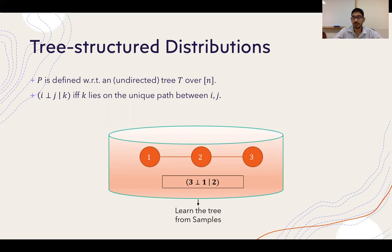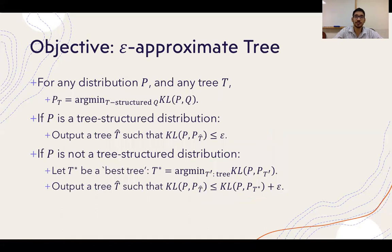We are not necessarily interested in recovering the exact structure — an approximate structure would be sufficient. More formally, we define the epsilon-approximate tree as follows. For any distribution p and any tree t, let p_t denote the distribution q that is defined on tree structure t and achieves the minimum KL distance from p among all distributions with tree structure t. We refer to this as the projection of p onto tree t. If p is truly a tree-structured distribution, our goal is to output a tree t-hat such that p's projection to t-hat is at most epsilon.